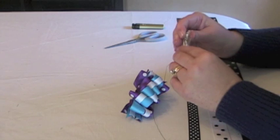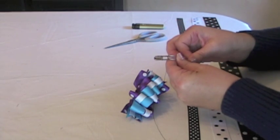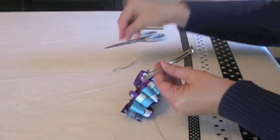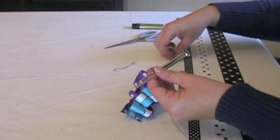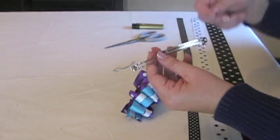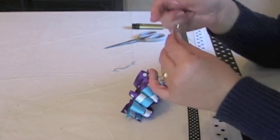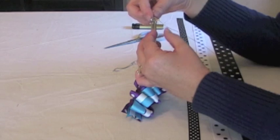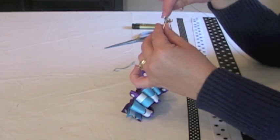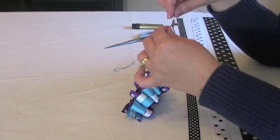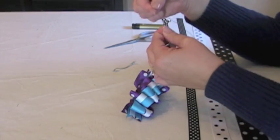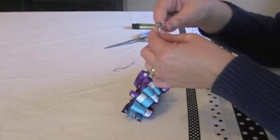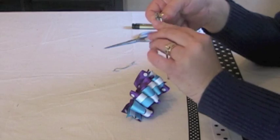The first thing you're going to do is take the center out of your French clip, and then you'll feed your wire through the hole, and then come around and wrap it a couple times, so that it's holding the end piece down.